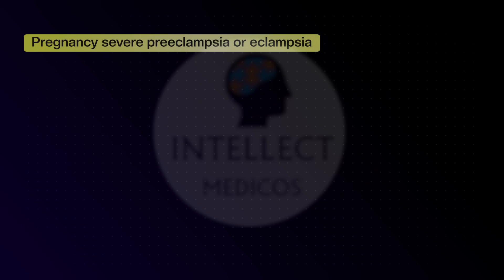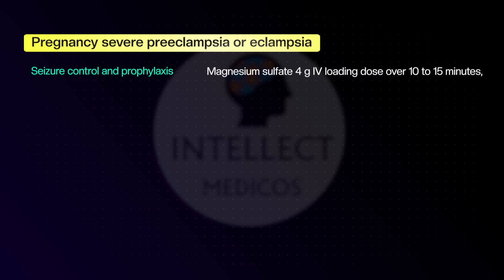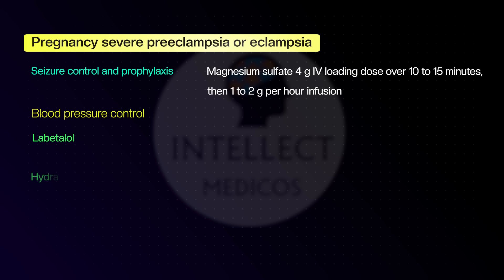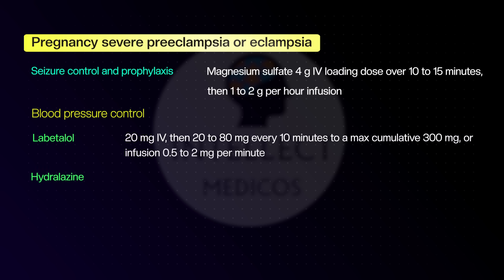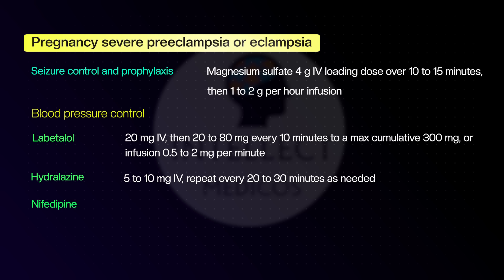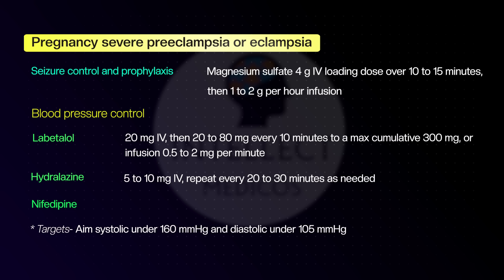For eclampsia — high BP with seizures in pregnancy — start seizure control and prophylaxis with magnesium sulfate: 4 g IV loading dose over 10 to 15 minutes, then 1 to 2 g per hour infusion. For BP control in pregnancy, use labetalol or hydralazine. Hydralazine dose is 5 to 10 mg IV; nifedipine is an alternative. Target systolic under 160 and diastolic under 105. Always avoid ACE inhibitors and nitroprusside in pregnancy.